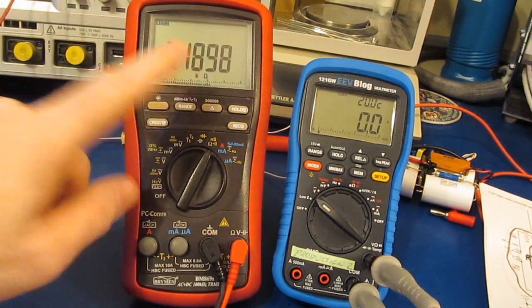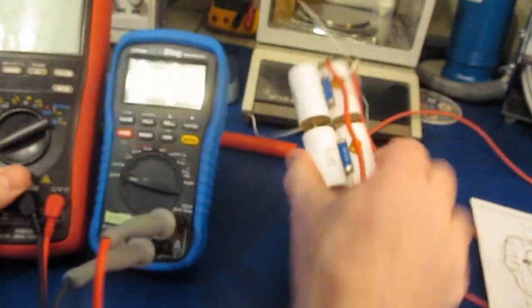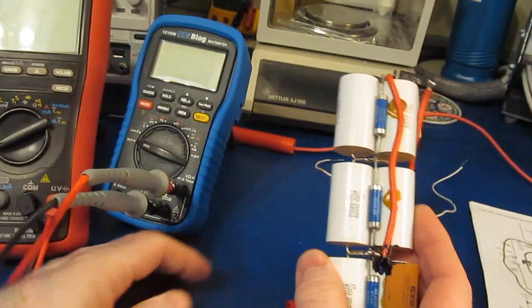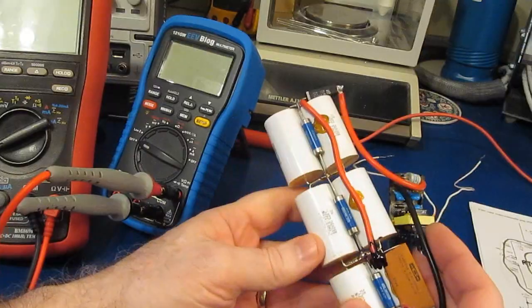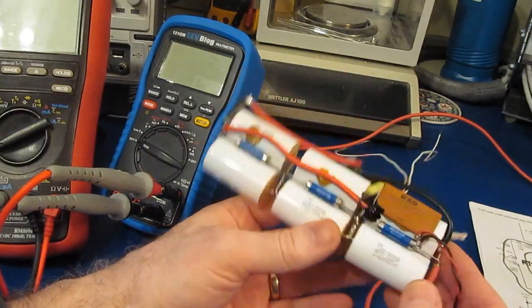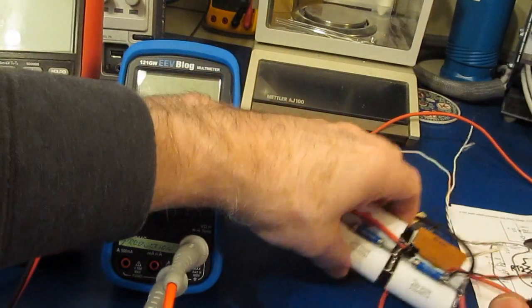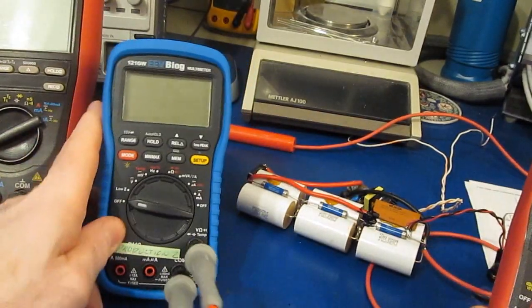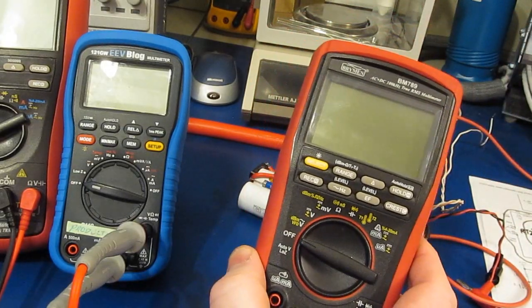One of the questions is what happens if we increase this capacitance. So instead of the one microfarad that I've currently been testing with, what would happen if this was a 10 microfarad or a 100 microfarad. What I'd like to do is apply 2000 volts DC, basically infinite capacitance, and let's just see what happens with the Bryman BM 789.